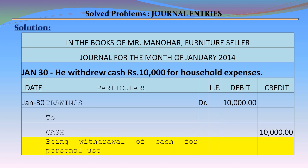January 30 – He withdraws cash of Rs. 10,000 for household expenses. Journal entry: Drawings Account debit Rs. 10,000 to Cash Account credit Rs. 10,000, being the withdrawal of cash for personal use.